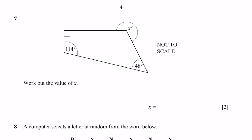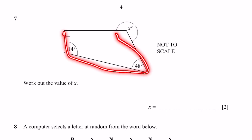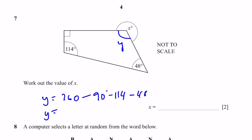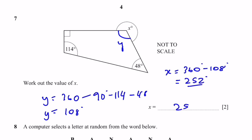Question 7. Work out the value of x degrees. This is a quadrilateral, so the sum of angles is 360 degrees. Let's name the unknown interior angle y. y equals 360 minus the other three angles: 90, 114, and 48, giving y equal to 108 degrees. Then x equals 360 minus 108, because these are angles around a point, giving 252 degrees.